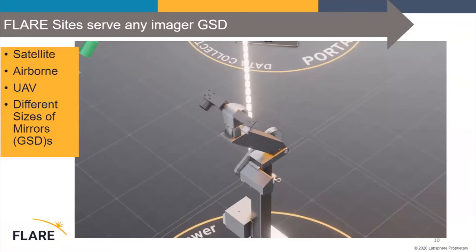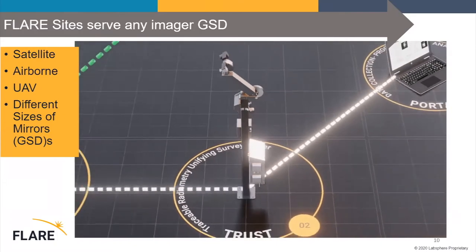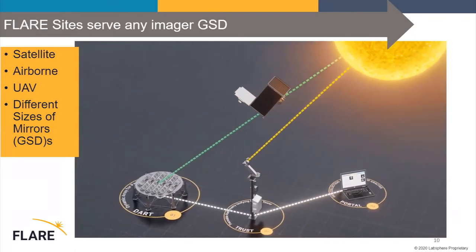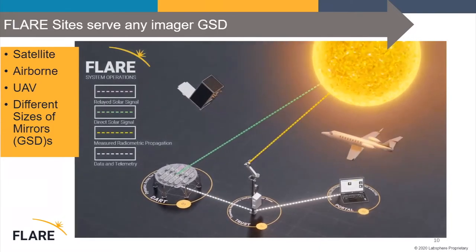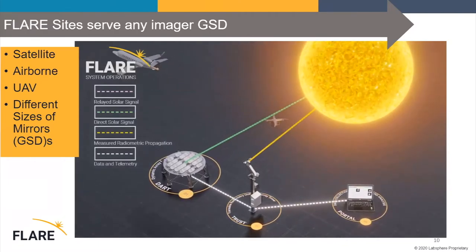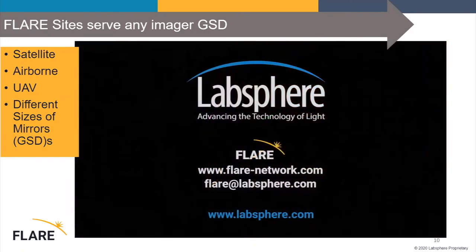I want to show how this can be used for different satellites. We have a radiometric tower, a portal, and a mirror station. A satellite comes over and we image it; then for an airborne solution we open a different set of mirrors; then for a UAV trying to capture high-resolution data we open a third set of mirrors. Different sizes of mirrors for different GSDs can handle all these different types of platforms.